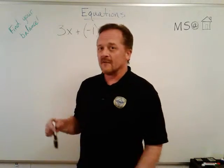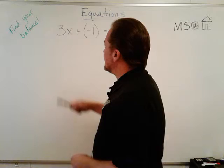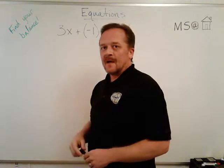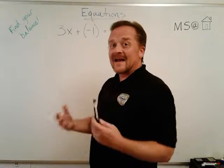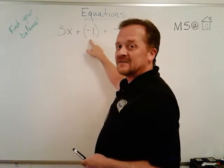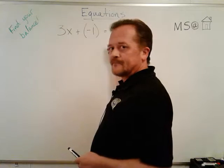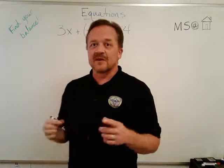John made a riddle for us, and let's review it real quick. He said here's my mystery number. I multiplied it by three, then I added a negative one to it, and that resulted in a negative four.